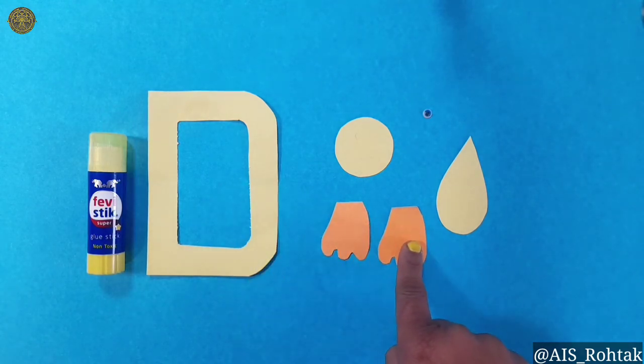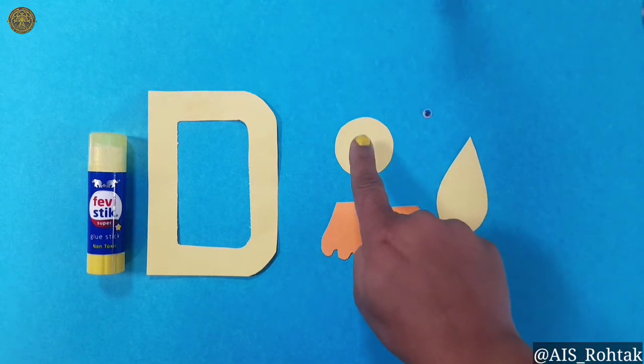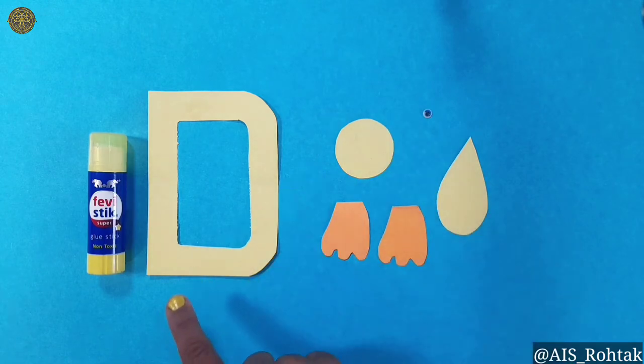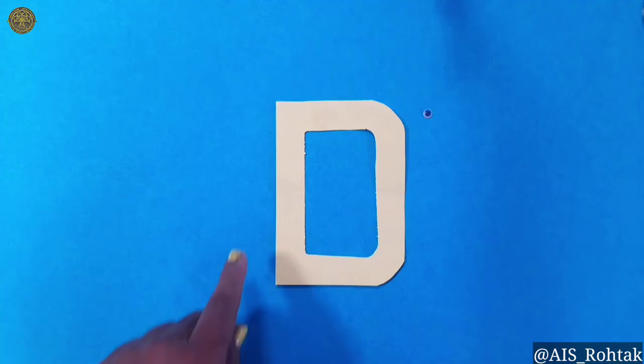Cut out this type of cut out for the feet, a drop shape cut out and a circle shape cut out, glue stick for pasting, and a few cut outs for beak and feather. It should be of red color.